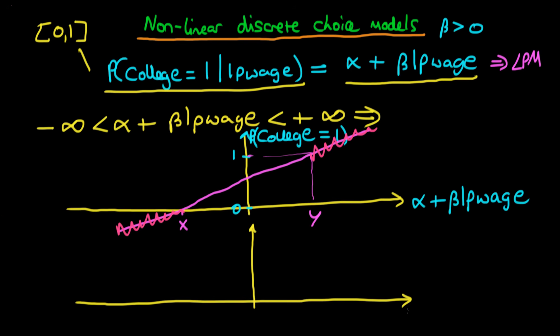The idea here is that we take some nonlinear transformation of our independent variables—I'm going to call this a function f. The defining properties of this function f are that, in the case when beta is greater than zero, when alpha plus beta times log of parental wage is very small and goes towards minus infinity, we want the function to take on the value of zero.